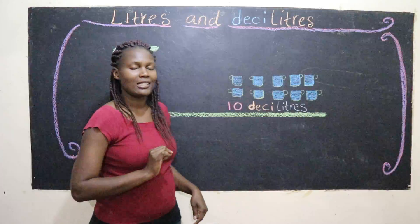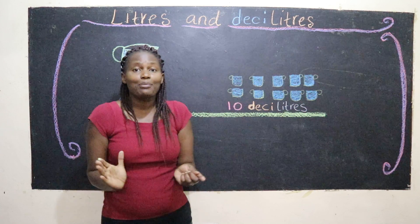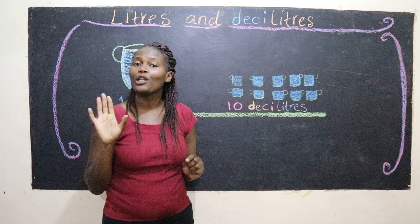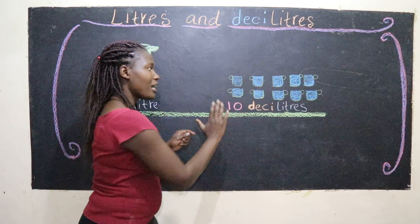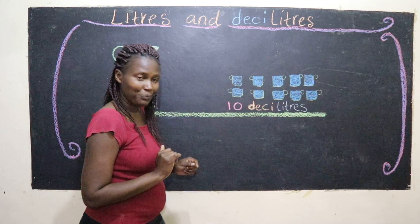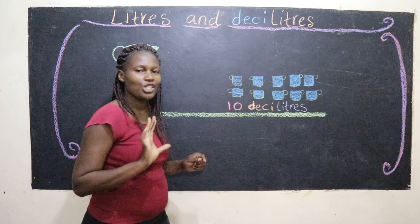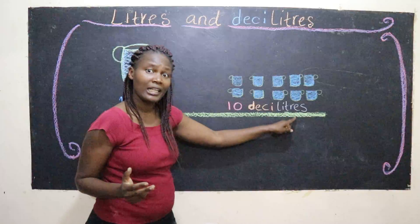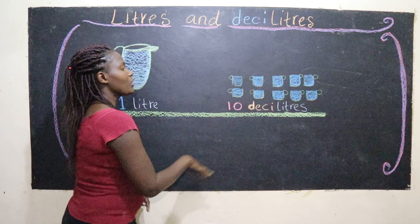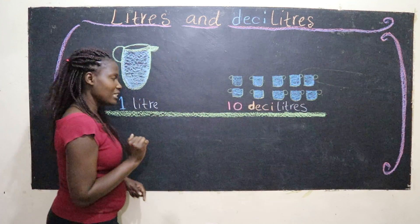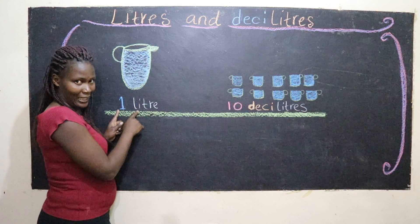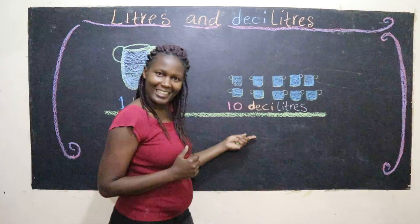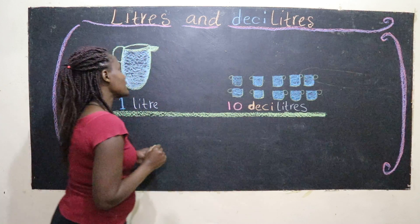Now look over here — this word is special in mathematics. 'Deci' simply means taking something that is whole and sharing it into ten equal portions, like we have done with our liter of water. Decimals — sharing into ten. And what have we been sharing? We've been sharing liters. So 10 deciliters equals 1 liter, and 1 liter is equal to 10 deciliters.